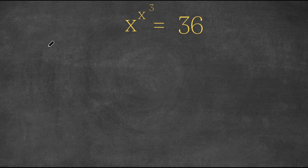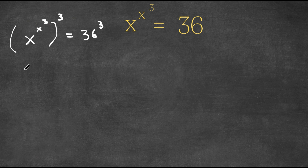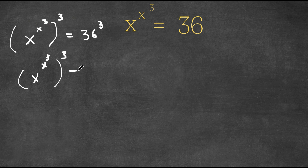I'm first going to take the power of 3 on both sides. So now we have x to the power of x to the power of 3, to the power of 3. This is equal to 36 to the power of 3. Now 36 is equal to 6 squared, so now we have x to the power of x to the power of 3 to the power of 3, is equal to 6 squared to the power of 3.